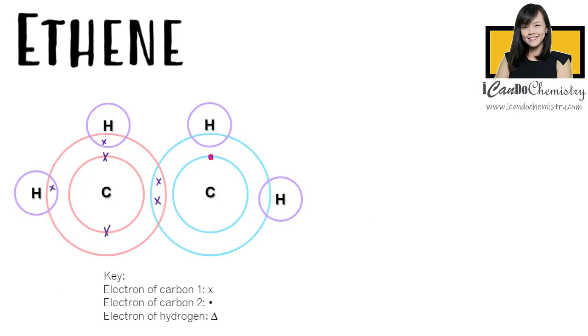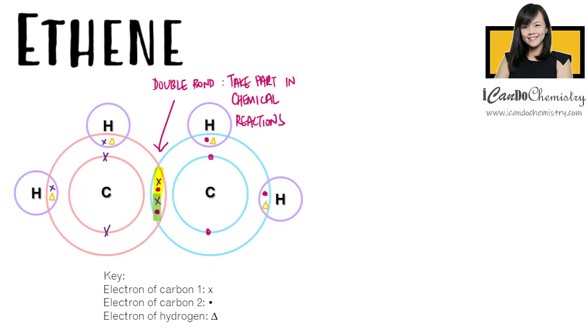The first member of alkene has two carbons and they share two pairs of electrons. An alkene must have a carbon-carbon double bond and they will use this functional group for chemical reactions. The carbons will then bond with four other hydrogens. And now all the atoms have achieved stable noble gas electronic configuration. Carbon now has eight outermost electrons, while hydrogen has two outermost electrons.